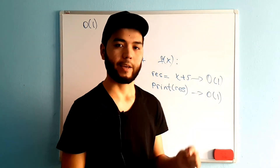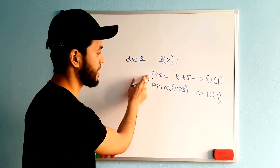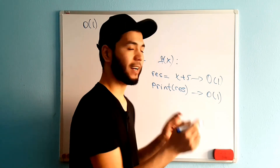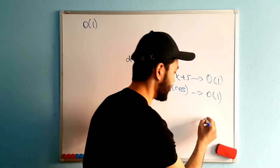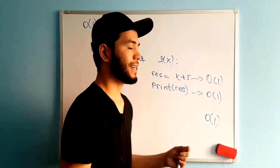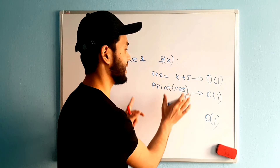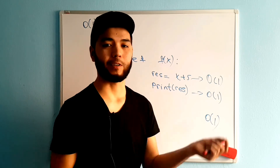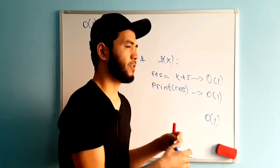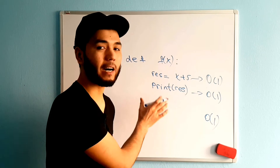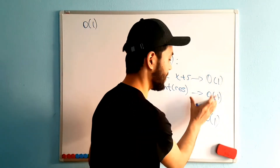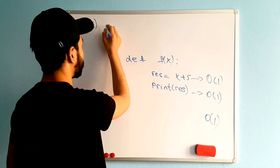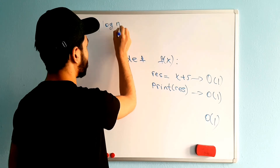We drop the constants every time. Even if I have 100 lines of the same code, it will not be O(100) — it will be O(1). We are just analyzing what is the time complexity of the algorithm. No matter how many constant operations you have, we always reduce it to O(1).